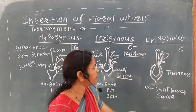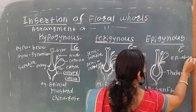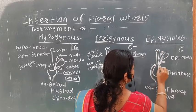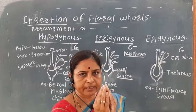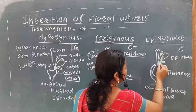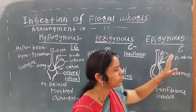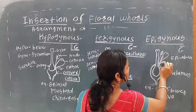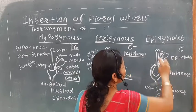The next type is the epigynous flower. 'Epi' means above and 'gynous' means gynoecium. Here the ovary is completely enclosed by the thalamus. The calyx, corolla, and androecium are above the ovary or gynoecium. This type of flower is known as epigynous.